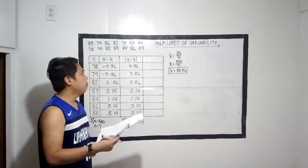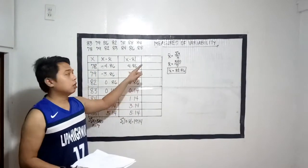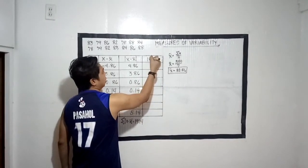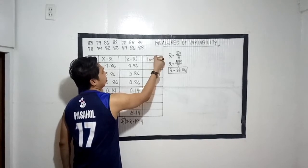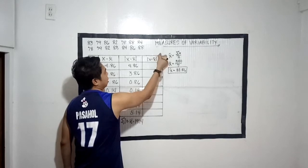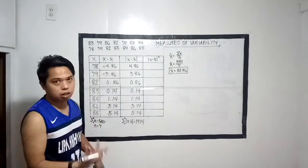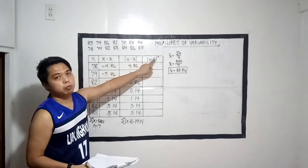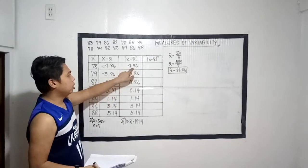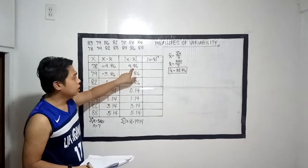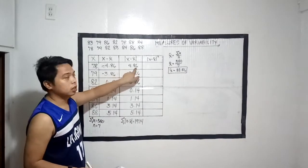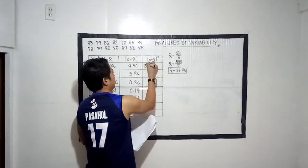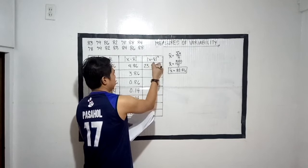Para sa last column natin, kukuha tayo ng squared values ng x minus mean. I-raise natin sa dalawa yung ating absolute value ng x minus mean — ibig sabihin, itong 4.86 ay itatimes natin sa sarili niya. So: 4.86 times 4.86 = 23.6196. Next, 3.86 times 3.86 = 14.8996.